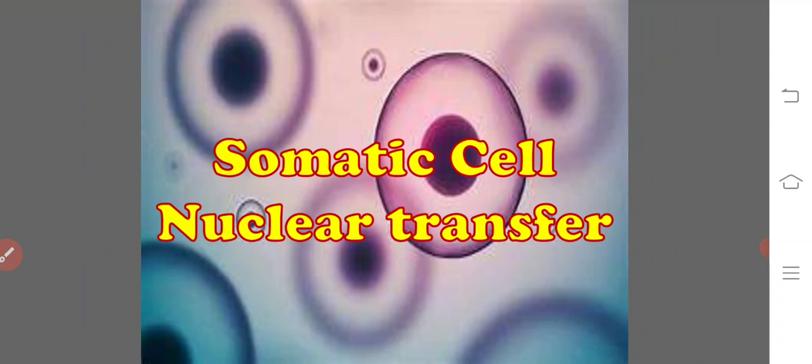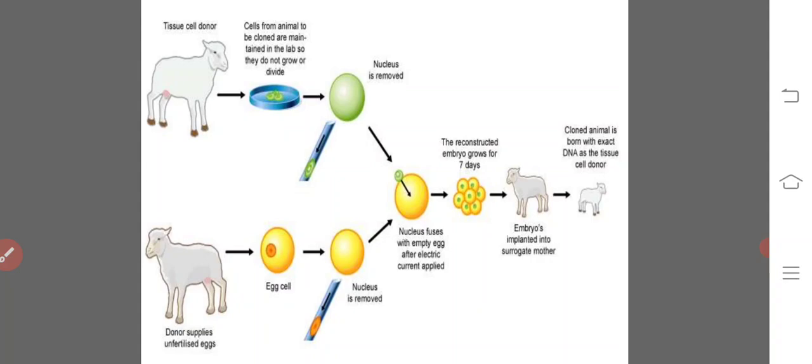Somatic cell nuclear transfer involves transfer of the nucleus from a donor cell to a recipient cell. This is done using micro-injection or electro-fusion methods. The recipient cell is usually an unfertilized egg. The donor cell may be a cultured embryonic cell or somatic cell from a fetus or adult. The nucleus is removed from the egg with an ultra-fine micropipette, the donor cell is fused with the enucleated egg, and the fused cell is implanted into the uterus of a surrogate mother to develop.